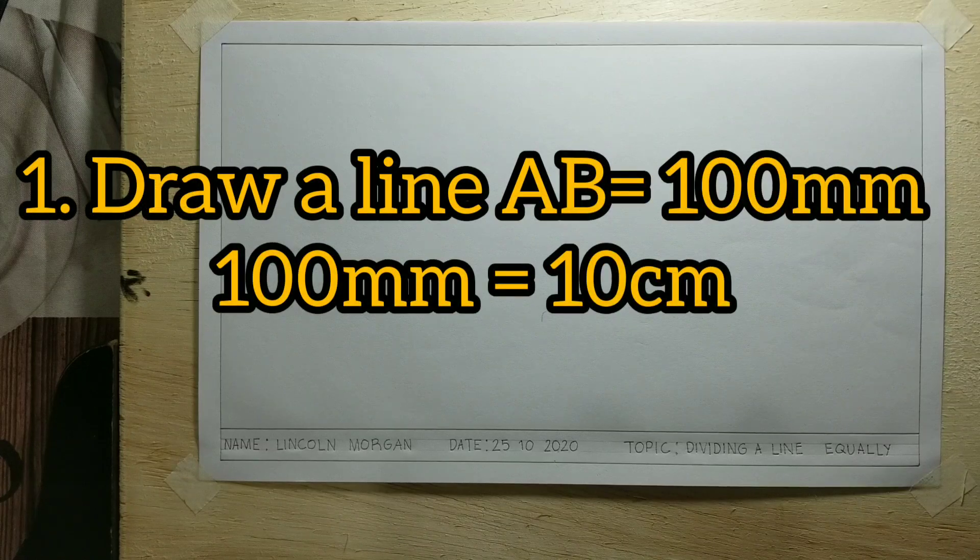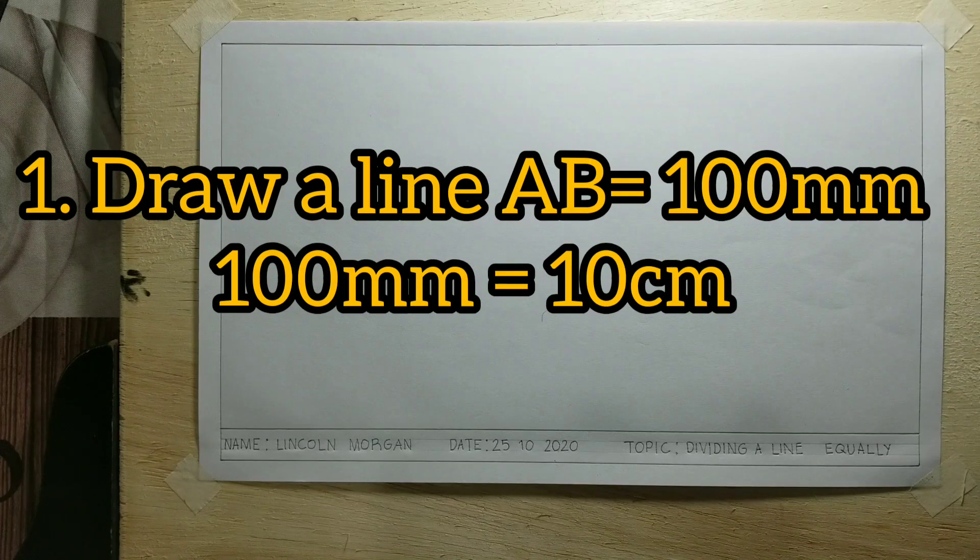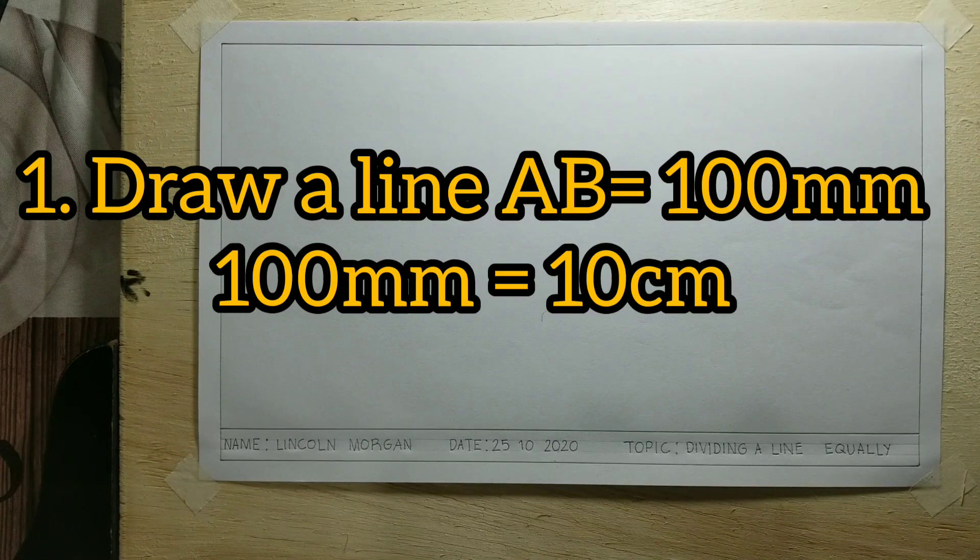Now that I've bordered my paper and completed my title block, I will now draw a line AB to measure 100 millimeters. 100 millimeters is the same as 10 centimeters.